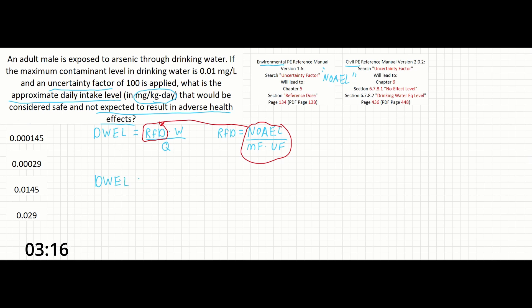So we're going to rewrite this as the DWEL equals the NOEL over the modifying factor times the uncertainty factor times the body weight over the amount of water ingested.